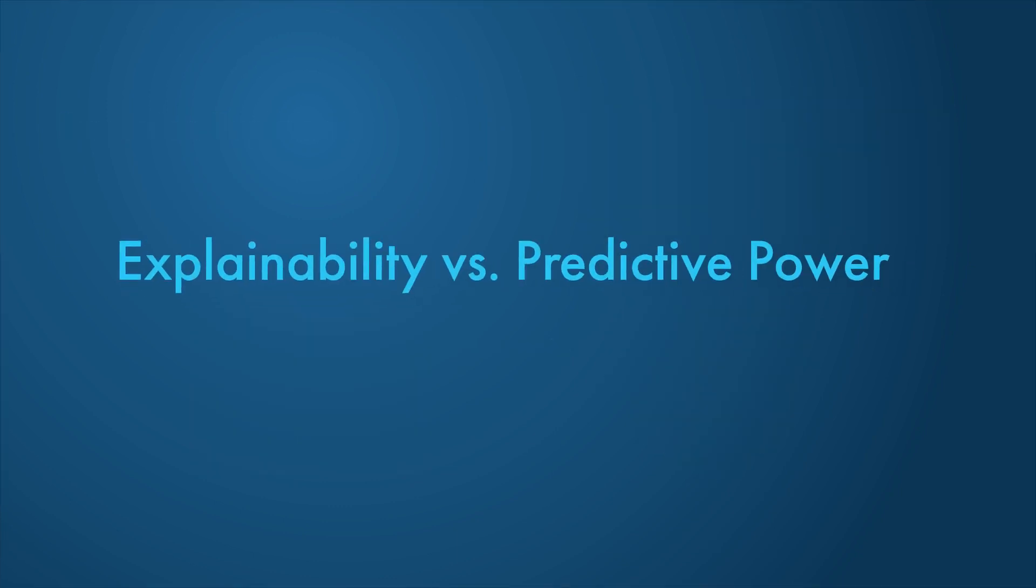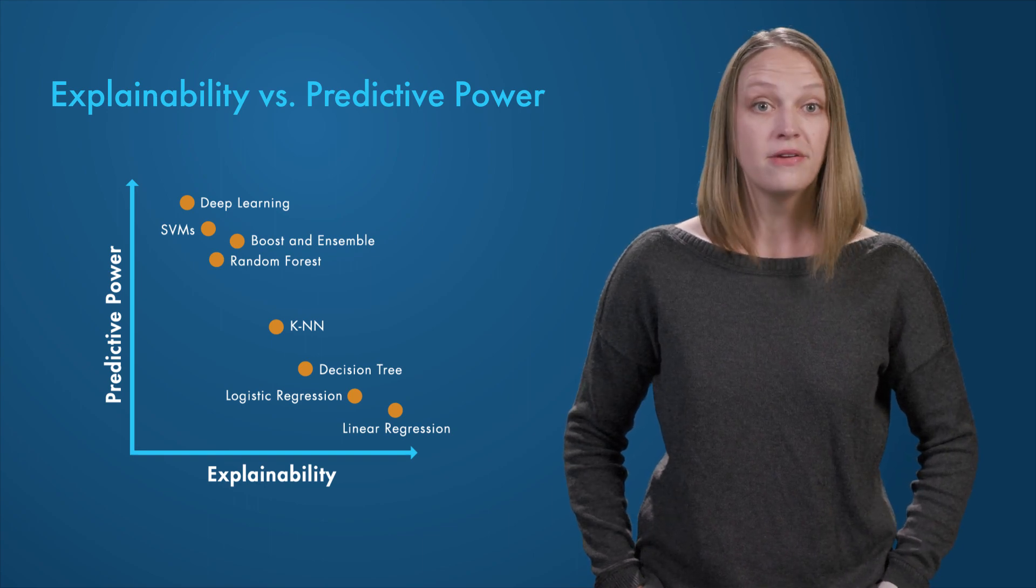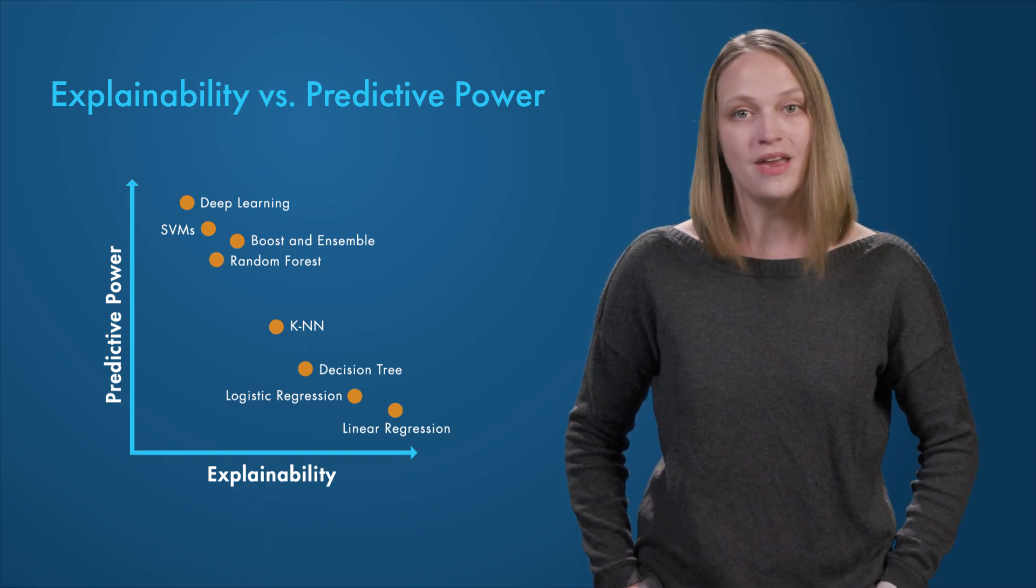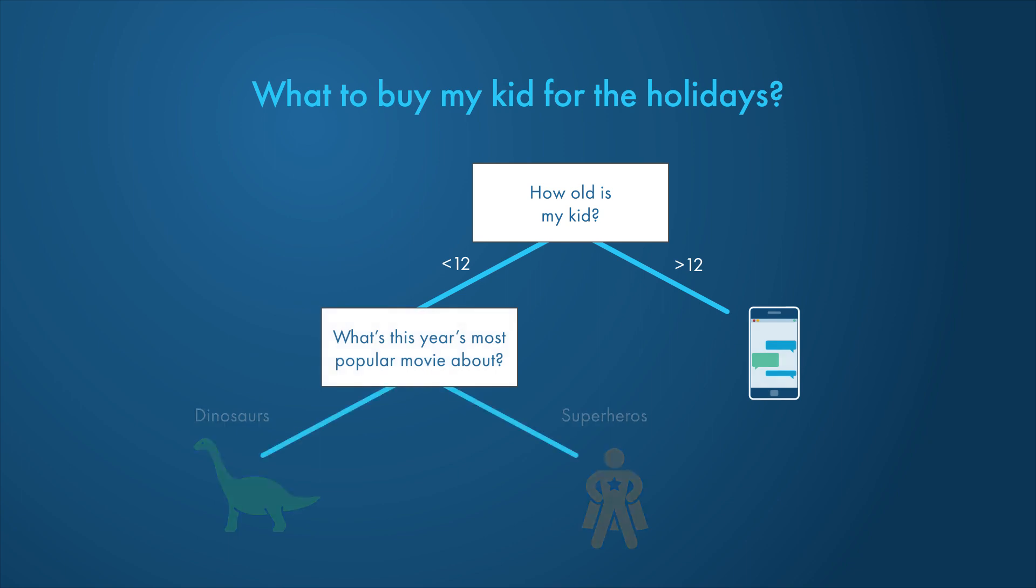Explainability often comes at the expense of power and accuracy. Deep learning models have great predictive power but they are the hardest to understand. On the other end of the spectrum, linear regression and decision trees are inherently explainable. Decision trees make it easy to trace every step towards prediction and quickly understand why a model makes a decision.